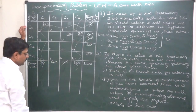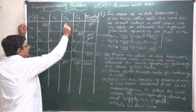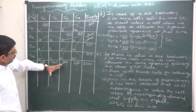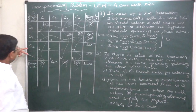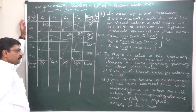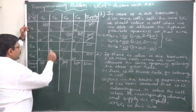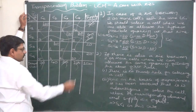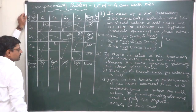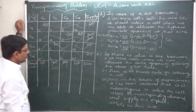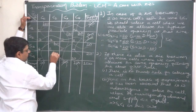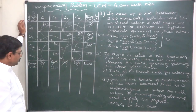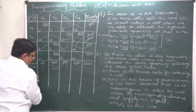Now only two cells remain. The total demand of column C2 is 40, and the total supply available from S3 and S4 is 20. Going by least cost, it is two rupees; the lower of demand 40 and supply 20 is 20 units. After allocating 20 units, that row's supply is exhausted and is cancelled. The last remaining cell S4C2 receives 20 units to complete the allocation.